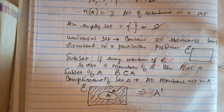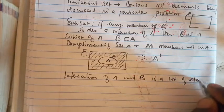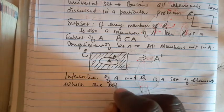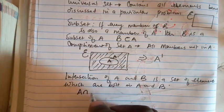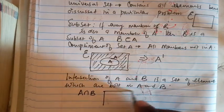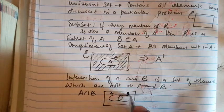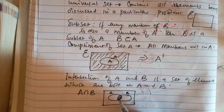The intersection of A and B is a set of elements which are in both A and B. We talk about A intersection B — these are the members that appear in both set A and set B.